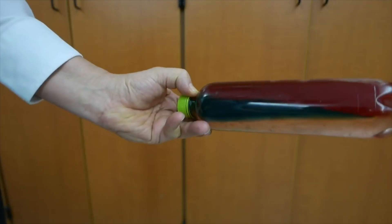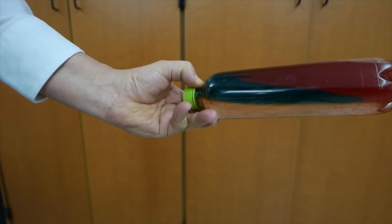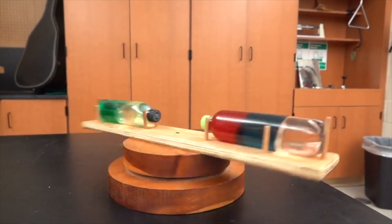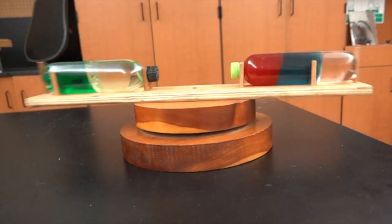The three liquids in this bottle have different densities. Notice the layers as I hold it sideways. As they spin around, the densest material goes to the outside. Here it is in slow motion.